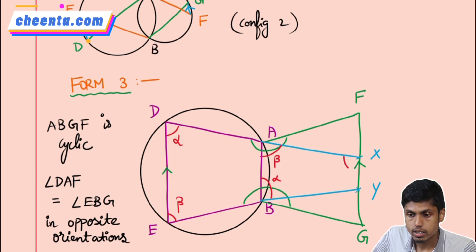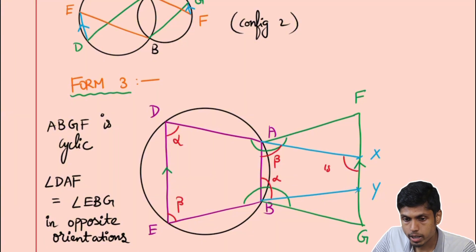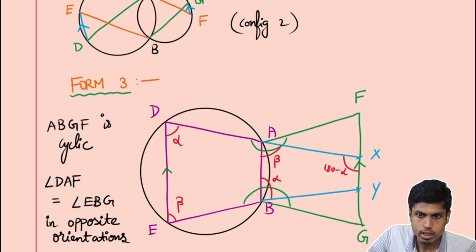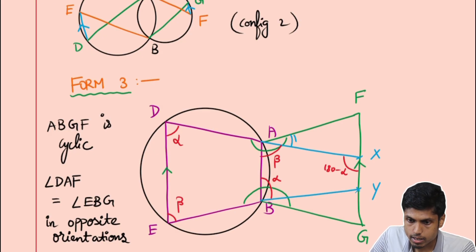Now I get the angle at X to be 180 minus alpha because DE and XY are parallel. So suppose if I think about this angle, then this will be DAF minus 180 degrees for this configuration. This is only for this configuration. If I vary, my argument will slightly vary. But still, let's stick to this configuration. Angle FAX is theta. Similarly, angle YBG is also theta.